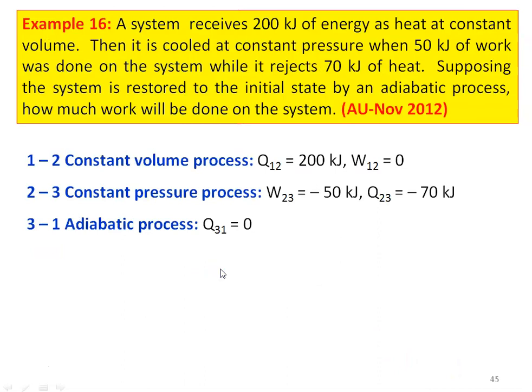Example number 16: A system receives 200 kilojoules of energy as heat at constant volume, then it is cooled at constant pressure when 50 kilojoules of work is done on the system, while it rejects 70 kilojoules of heat. Supposing the system is restored to its original initial state by an adiabatic process, how much work will be done in the process? There are 3 processes.